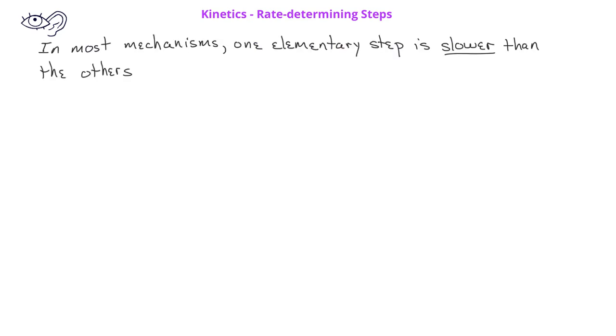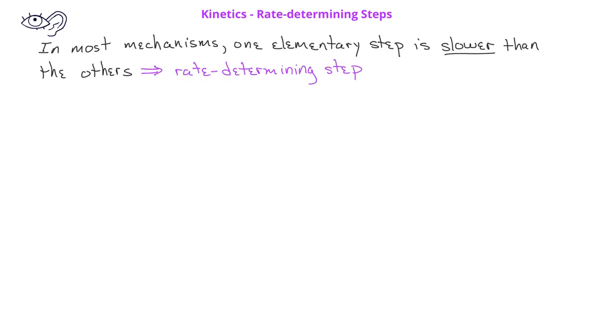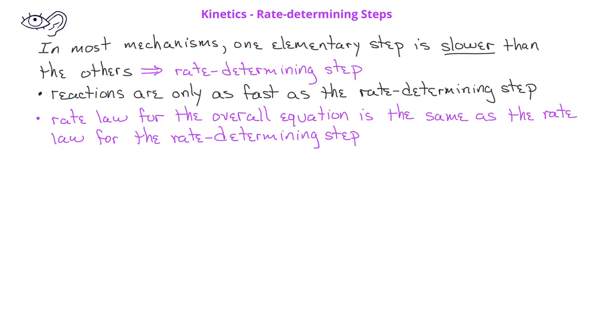In most chemical reactions, one elementary step is slower than the others. This slow step is called the rate determining step. The reaction can never go faster than the slowest rate determining step.